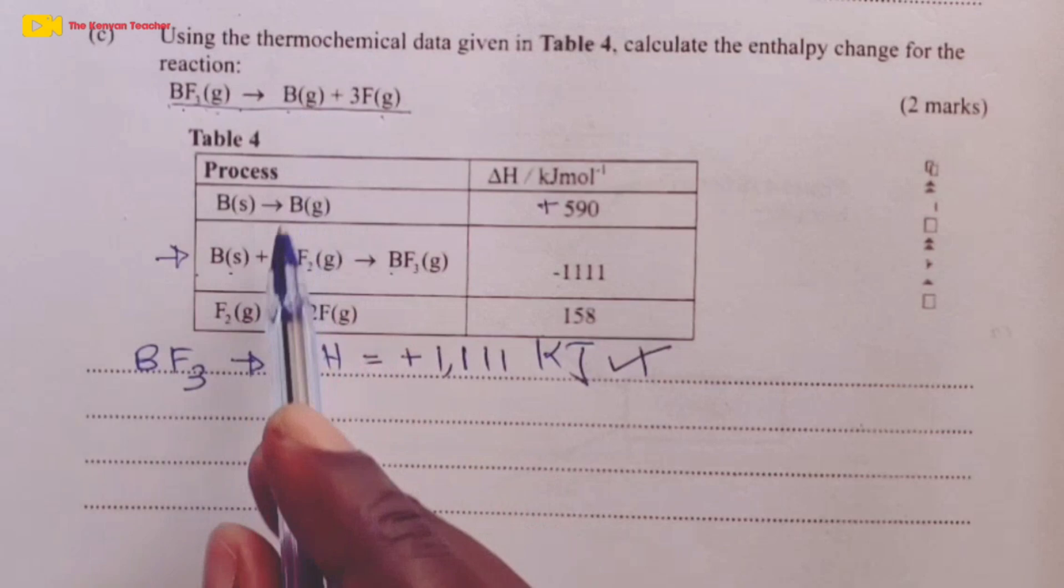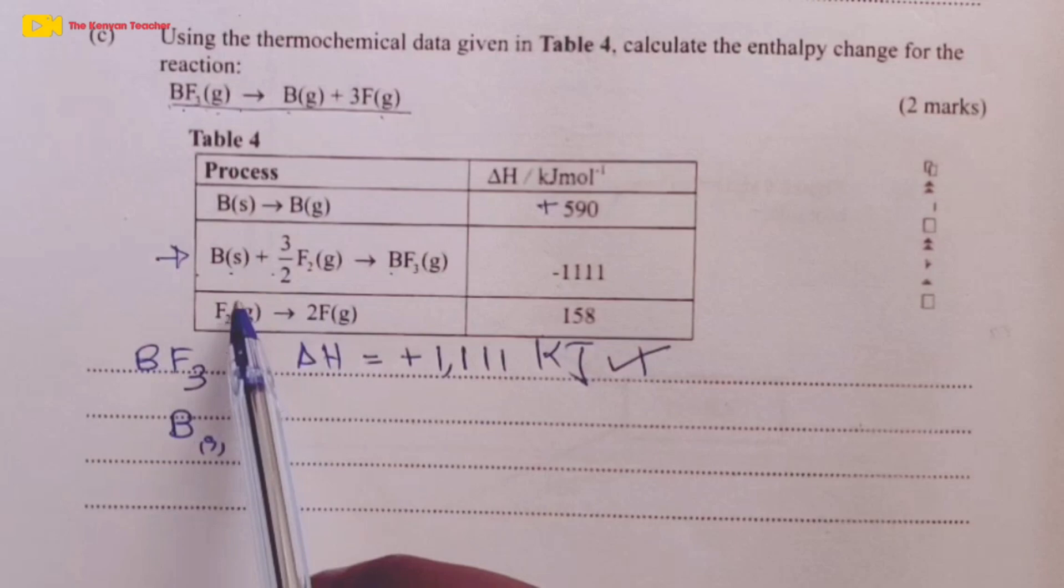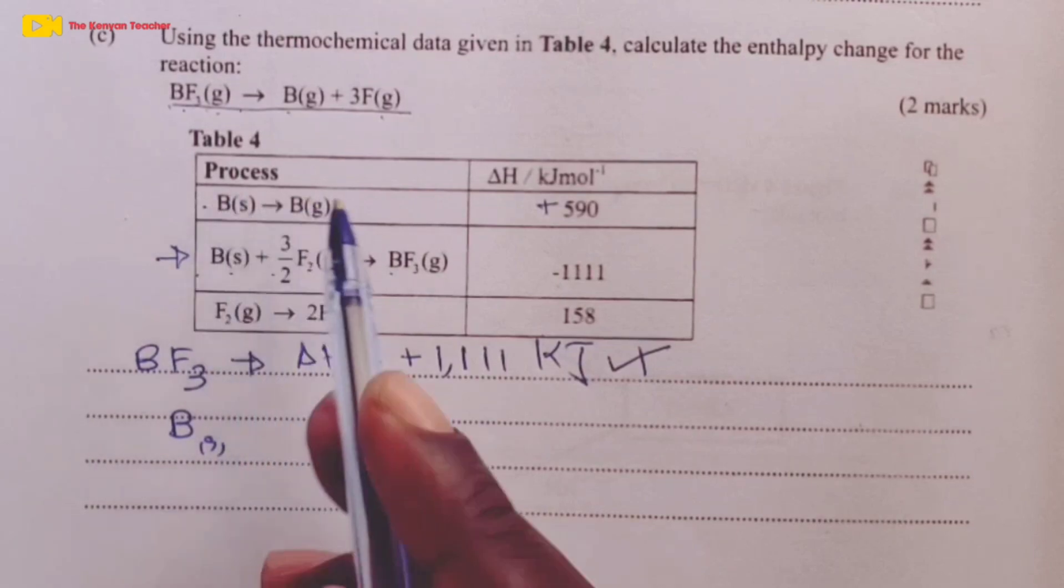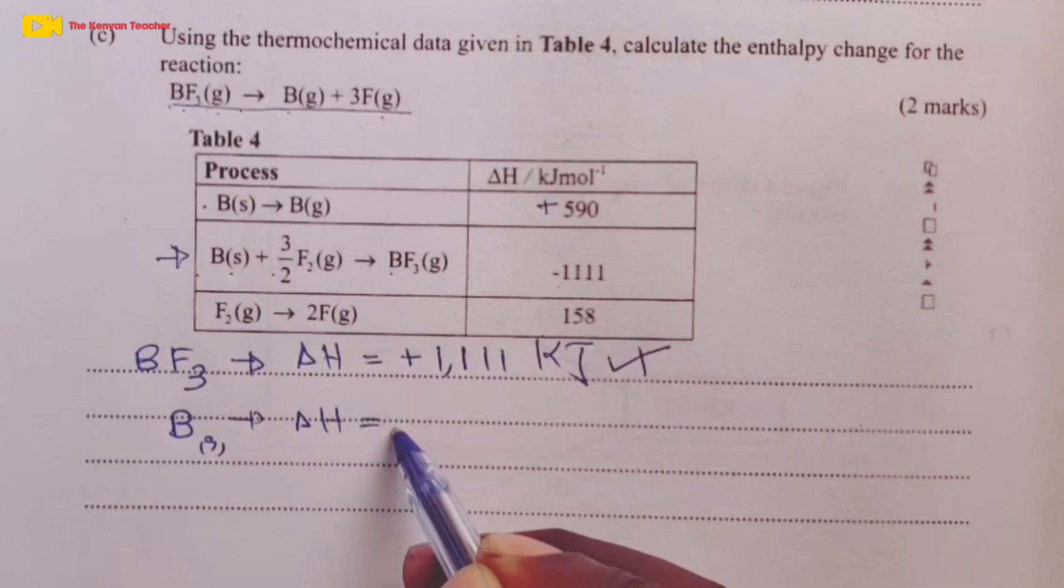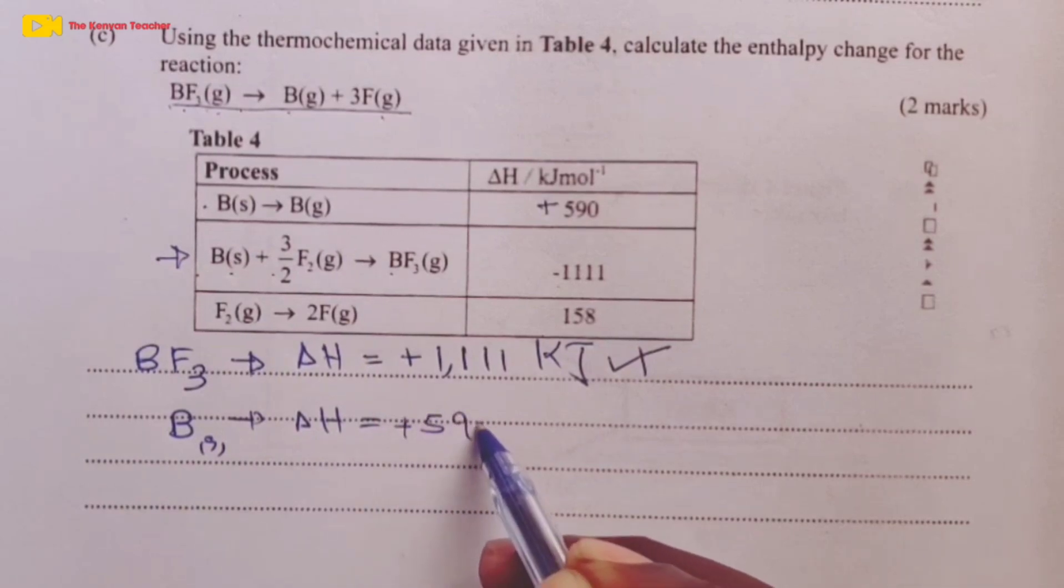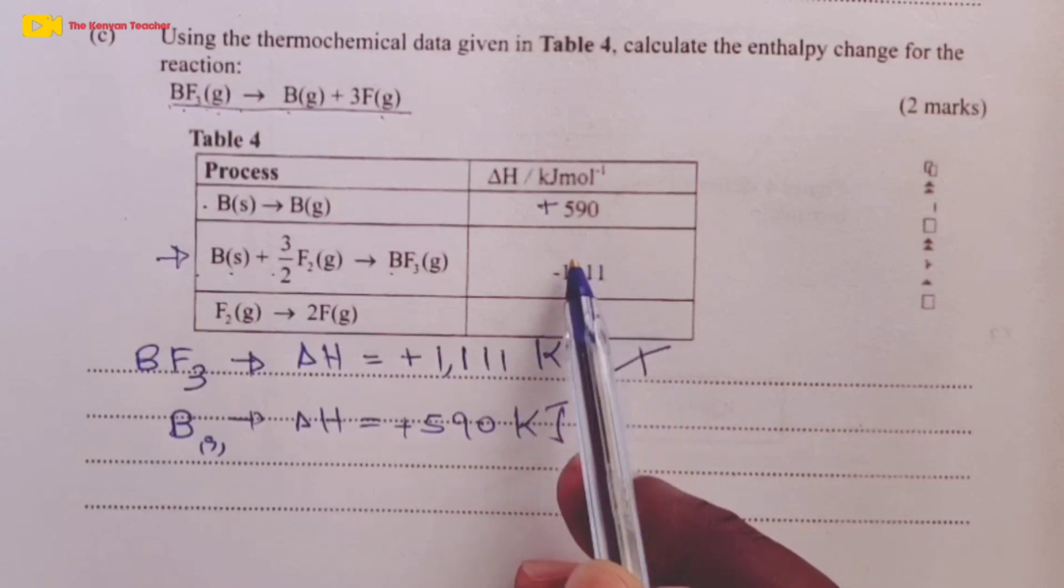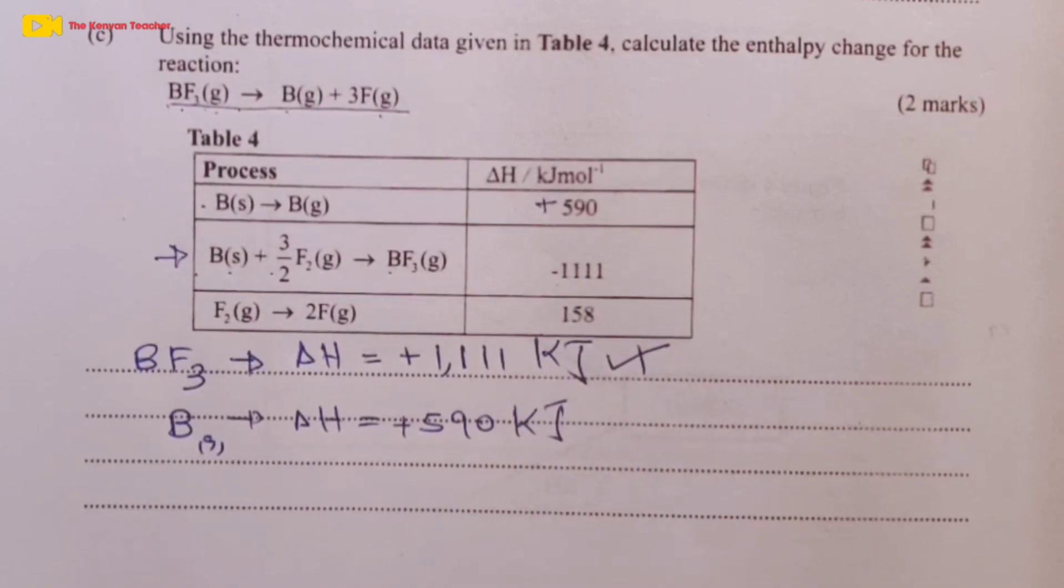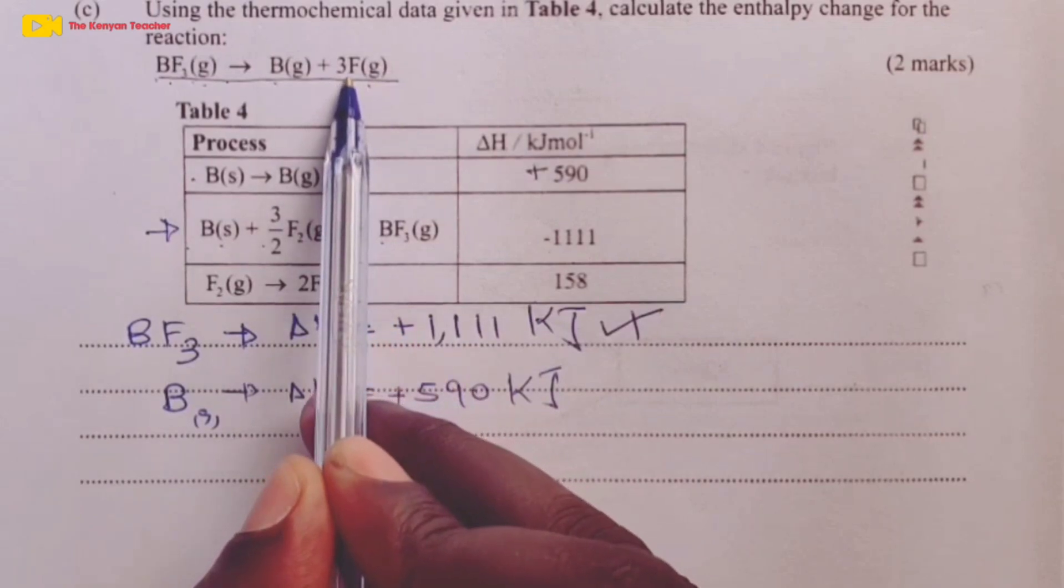To our products now, we are getting B gas from B solid using process 1. The heat energy involved here is positive 590 kilojoules. This was copying from the table, so we did not award any mark for it.